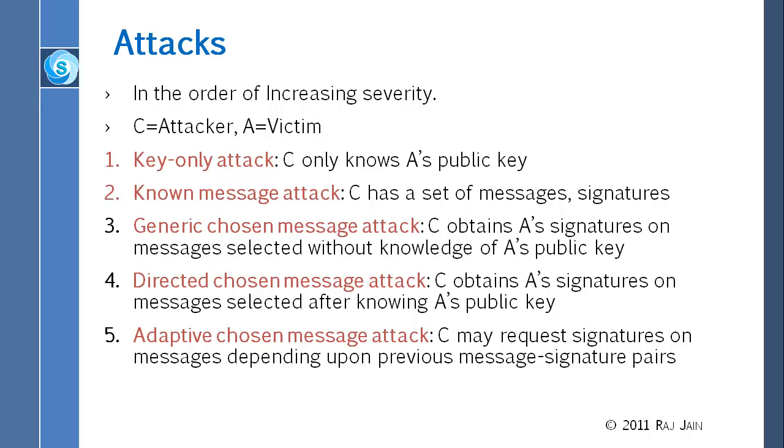Generic chosen message attack is that C obtains A's signature on a message selected without the knowledge of A's public key. So C doesn't know A's public key, but C gives a message to A, says please sign it. A signs it and then now C, the message is such that somehow C can figure out something from that particular message structure.